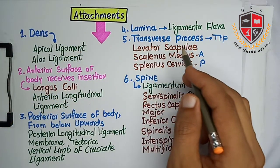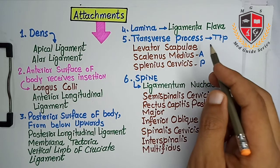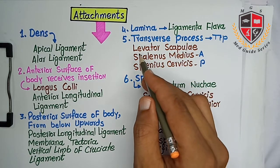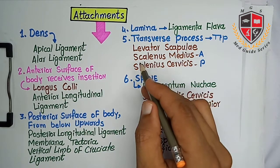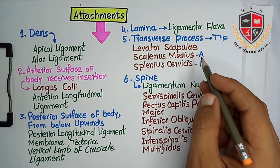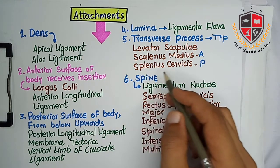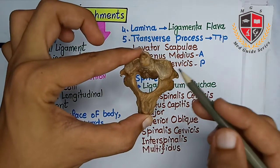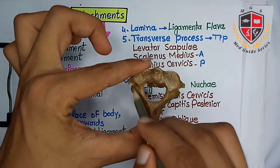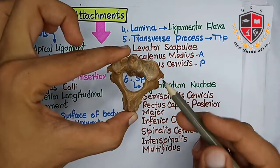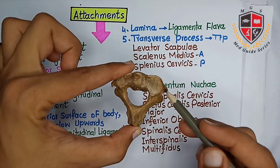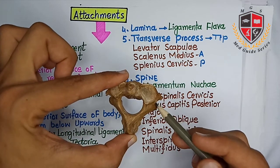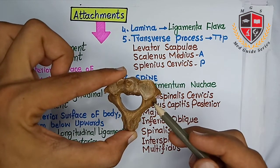The transverse process at its tip provides attachment to levator scapulae, scalenus medius anteriorly, and splenius cervicis posteriorly. This is the transverse process. It gives attachment to levator scapulae, scalenus medius, and splenius cervicis posteriorly.